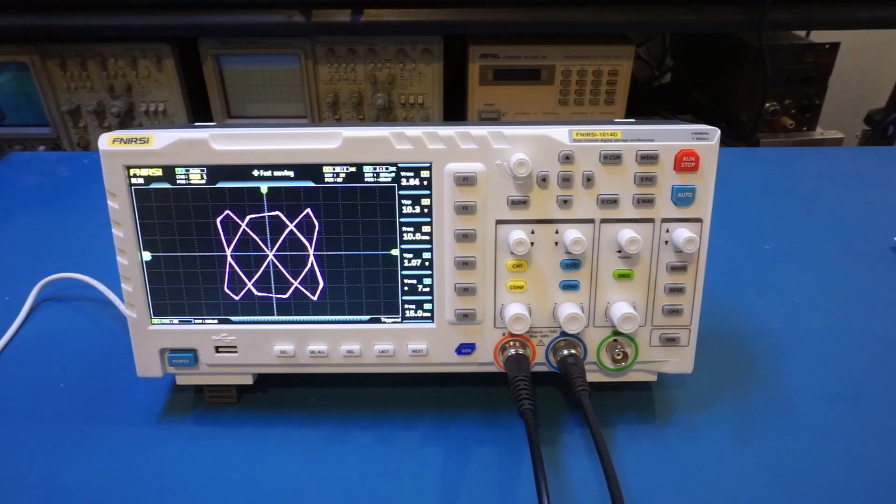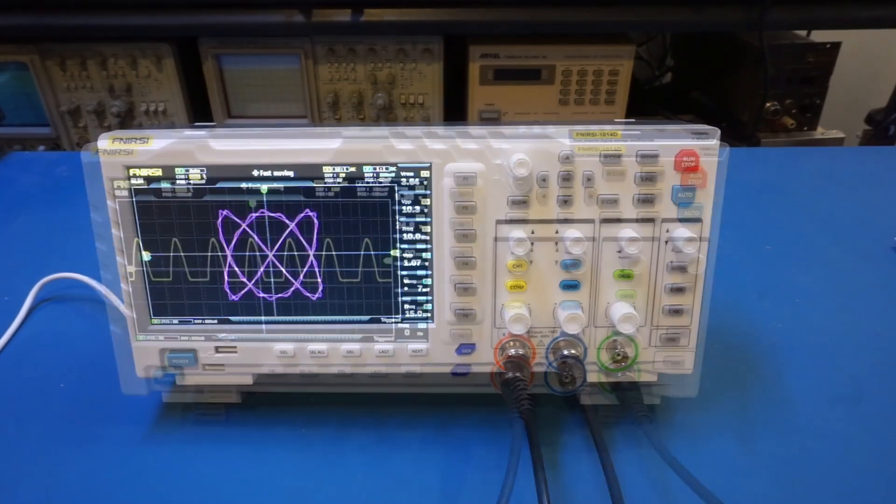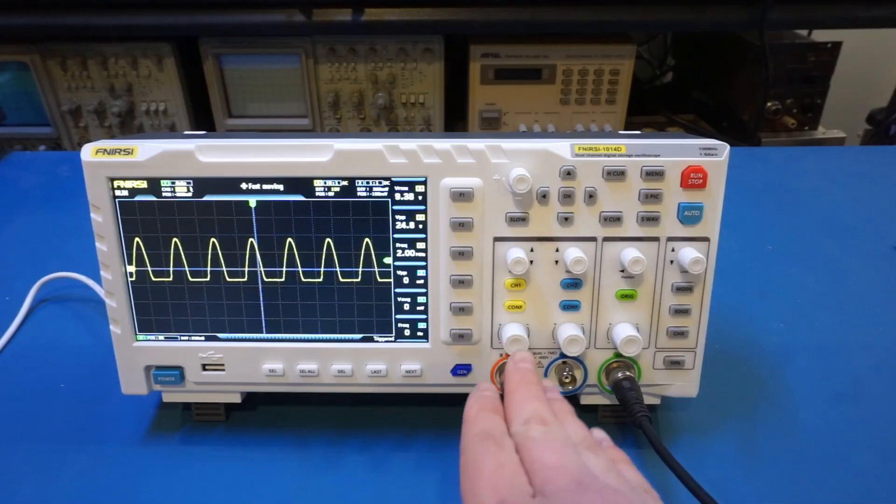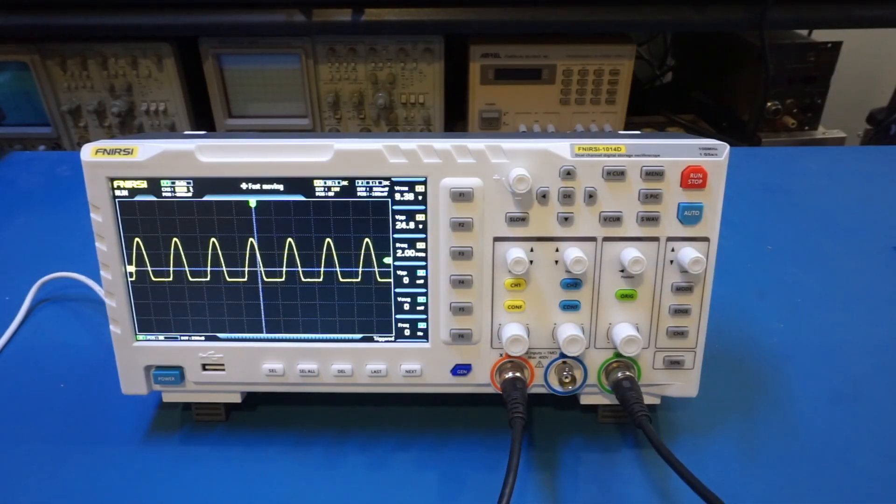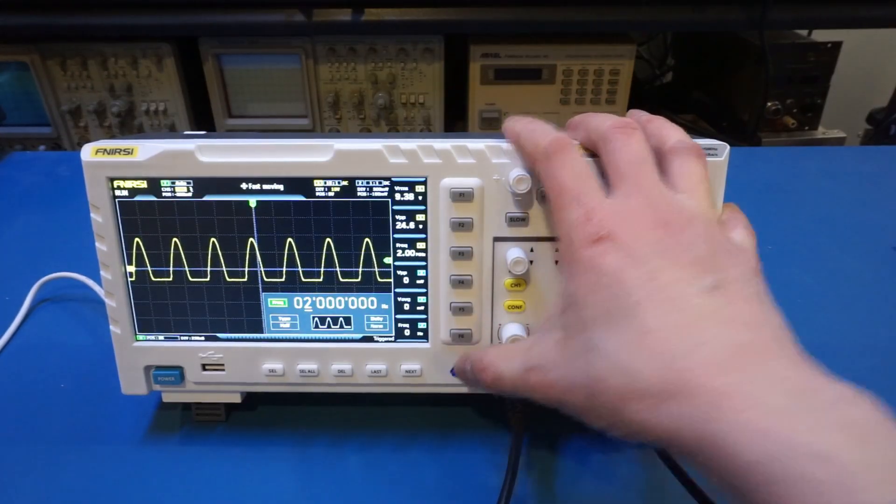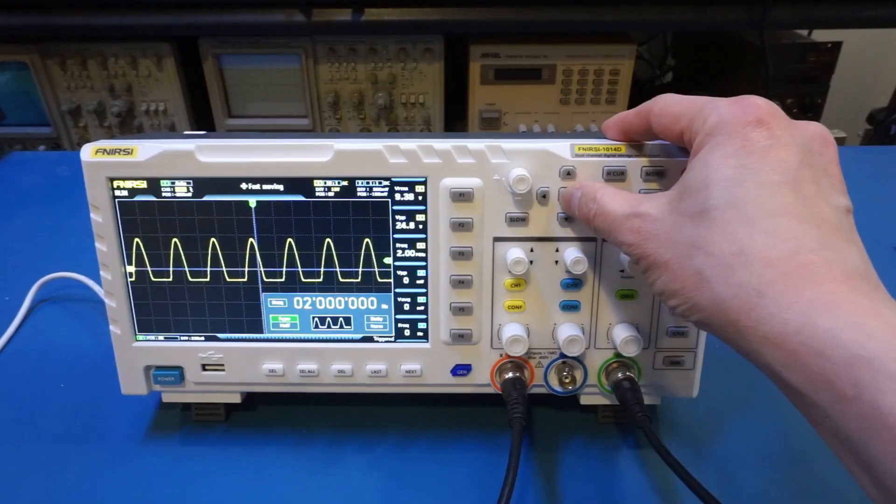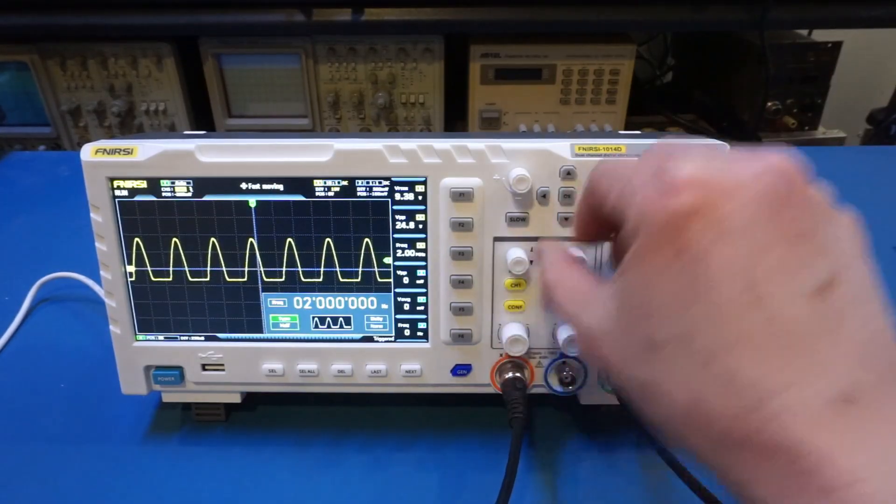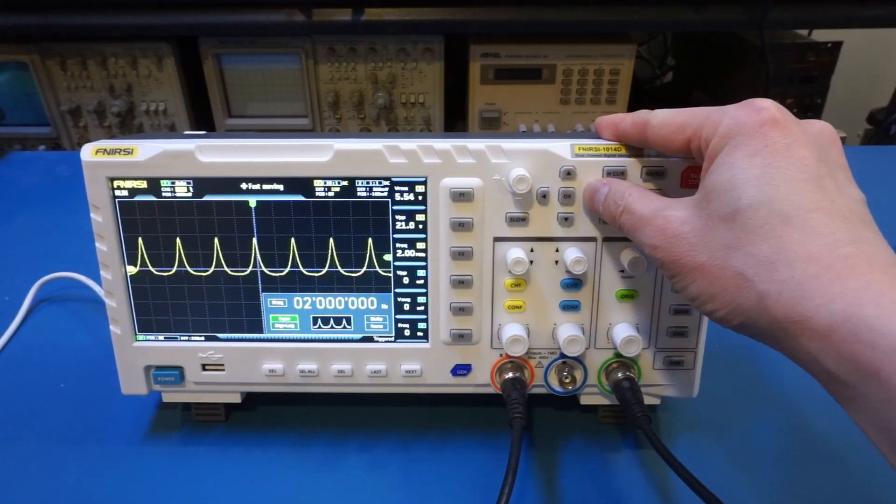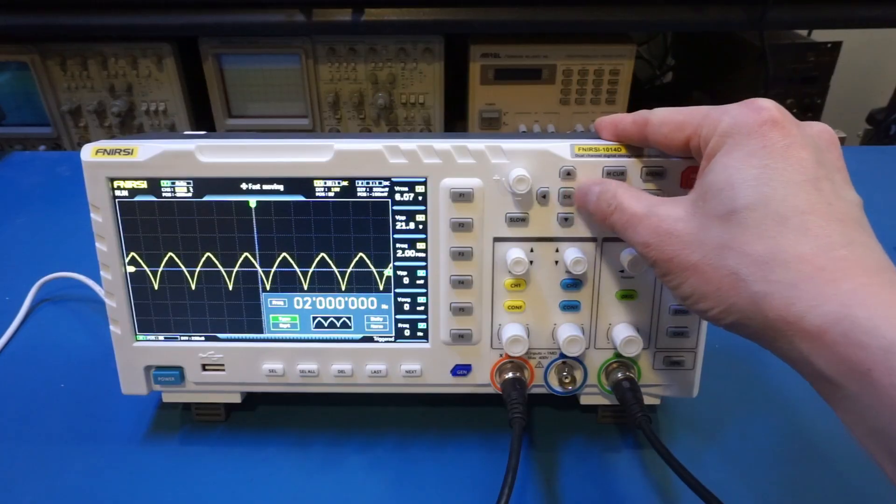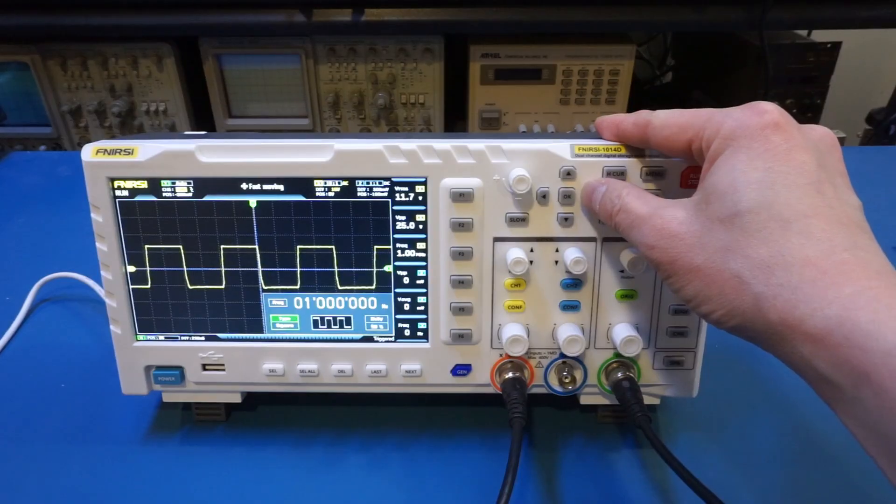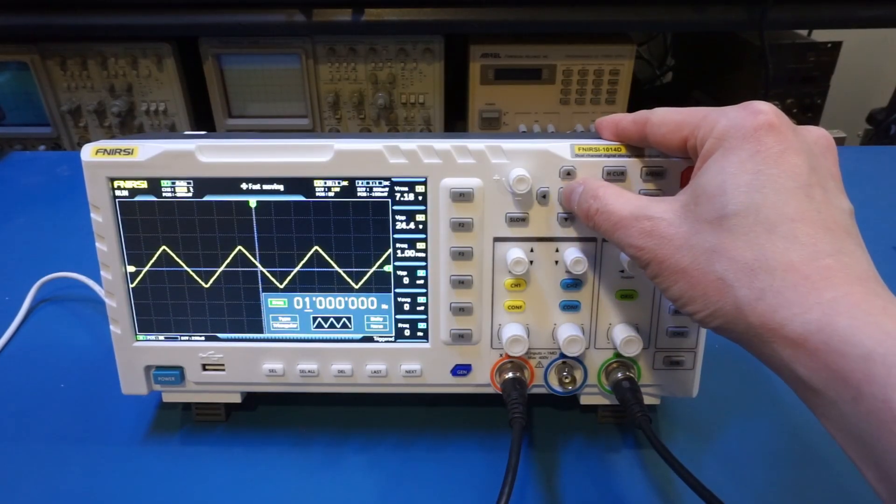And the scope also comes with a function generator. Right now I have the function generator output hooked up to the channel 1 input, and you can already see the waveform displayed on the oscilloscope. So let's poke around here, and as you can see we have different types. By the look of it, we can select different waveforms, and I assume we can also change the frequency. Let's change to an interesting waveform first. And let's go to frequency and let's change it.